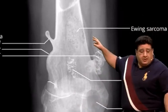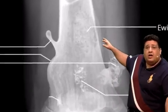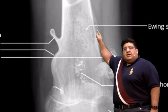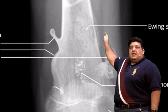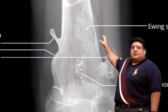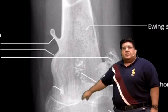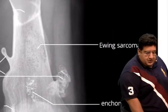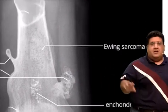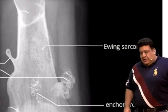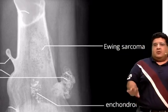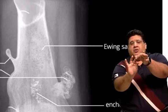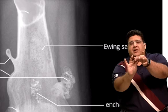I'm sure you're all able to see the laminated, layered periosteal reaction — that is what is called the onion peel appearance. This picture is what we know by the name of Ewing's sarcoma.